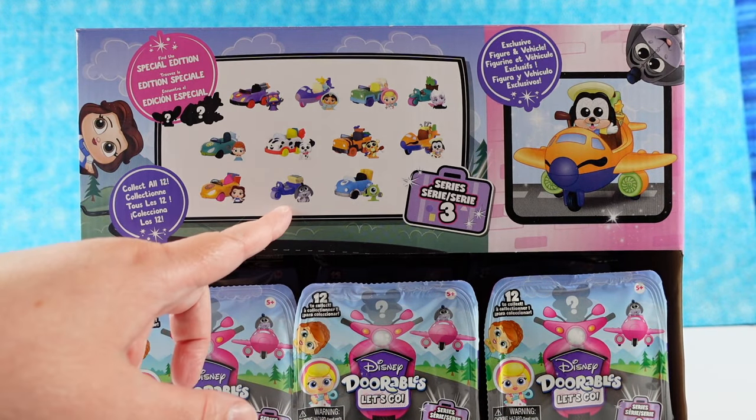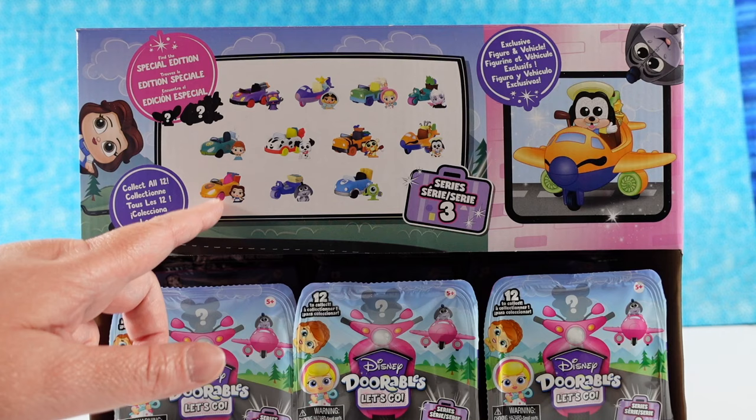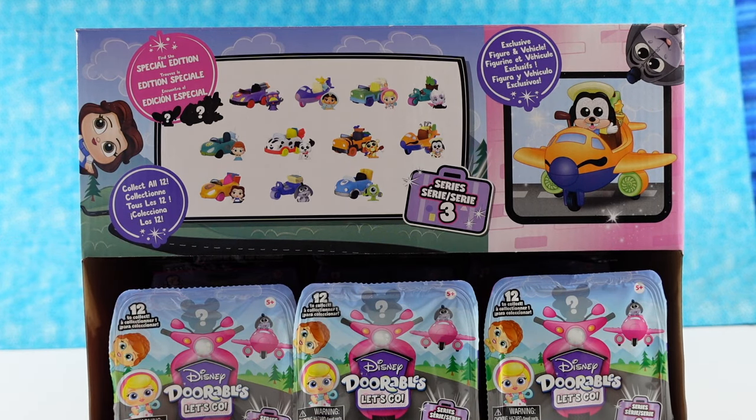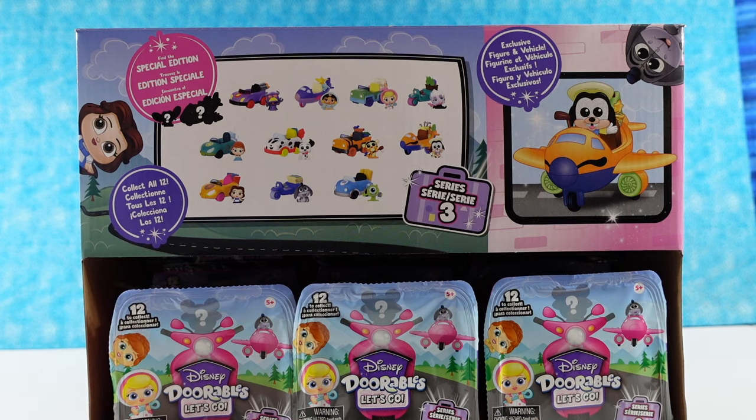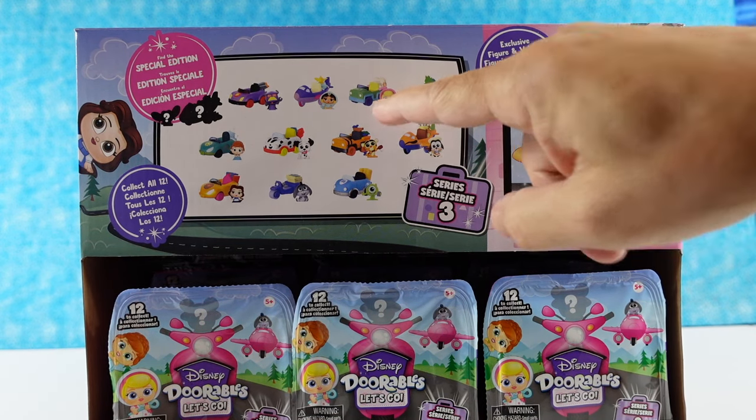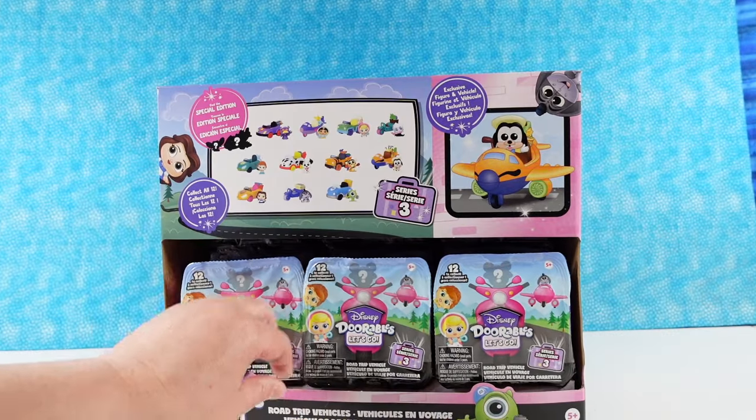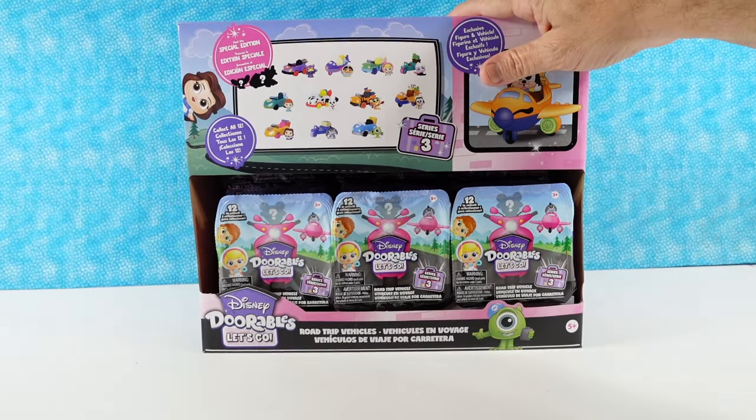I really want Eeyore and Tigger, but Belle as well. Belle, that rhymes. Belle as well. And look at Zurg. Zurg looks cool. They all look good. I think it's full peep. Yeah, I'm going to rest it to see these. Alright, so Paul is going to pick the first one and get us started.